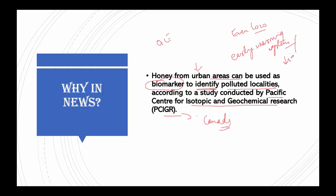Therefore it is necessary to develop an early warning system — signals known as biomarkers — that convincingly reflect diverse biological responses towards anthropogenic environmental toxins. Anthropogenic environmental toxins are man-made toxins present in the environment due to human activity, even at minute concentrations.